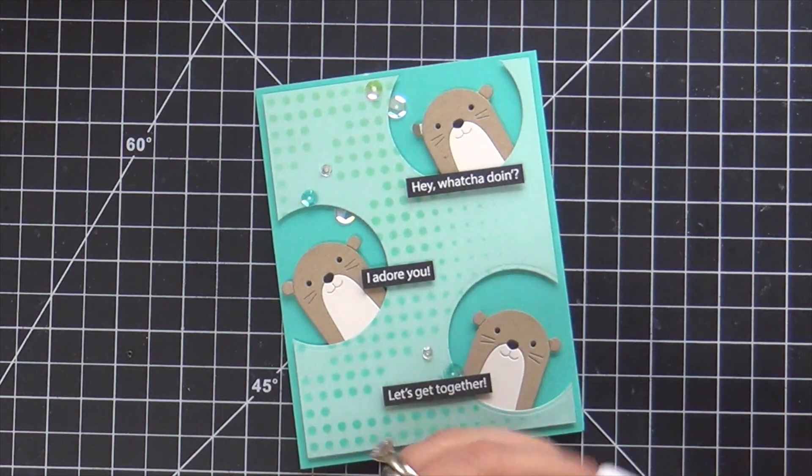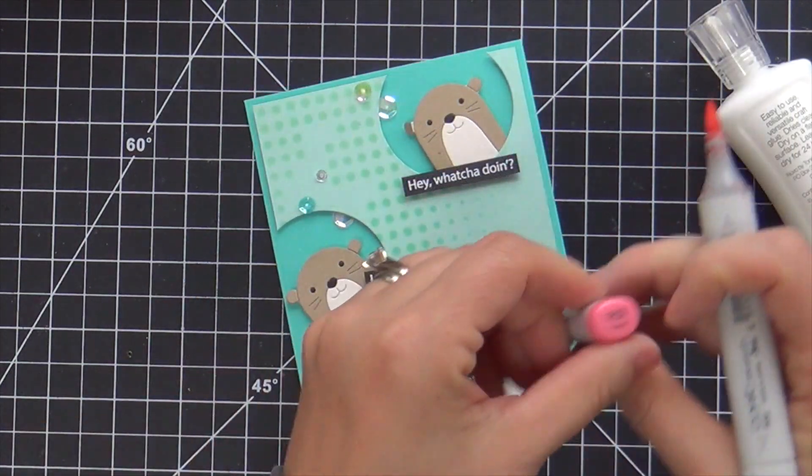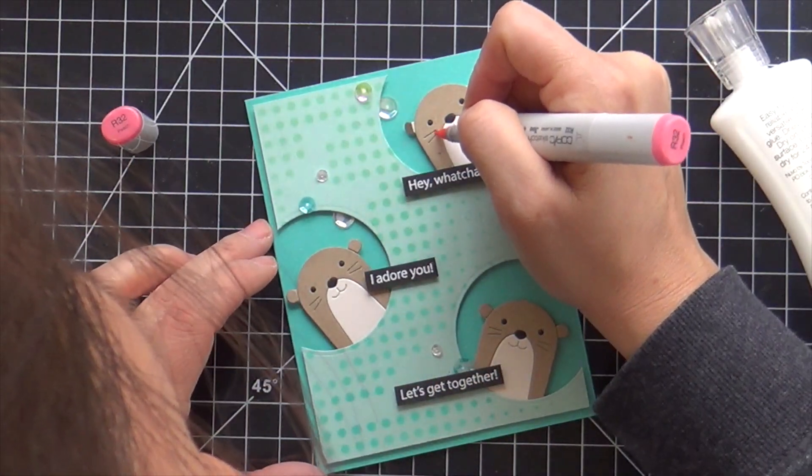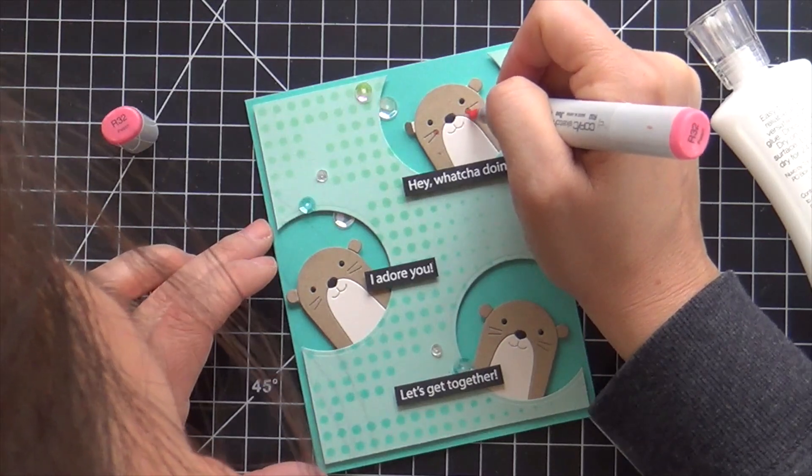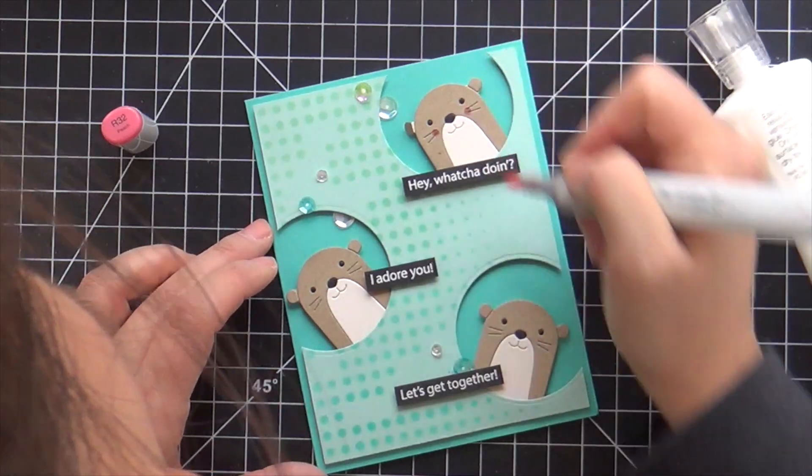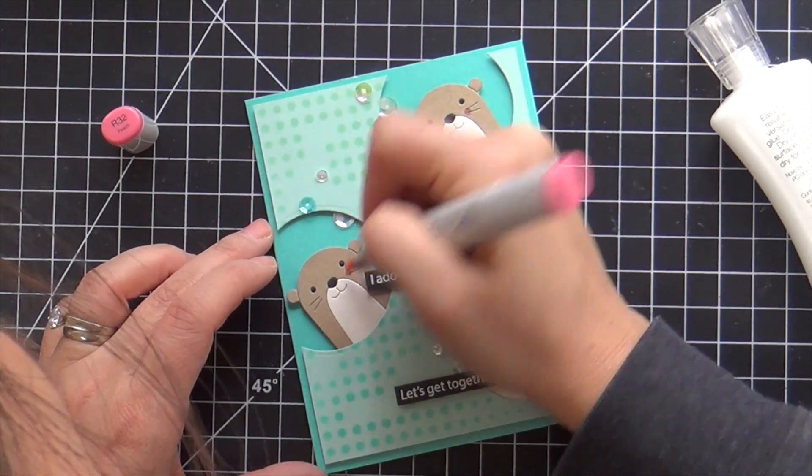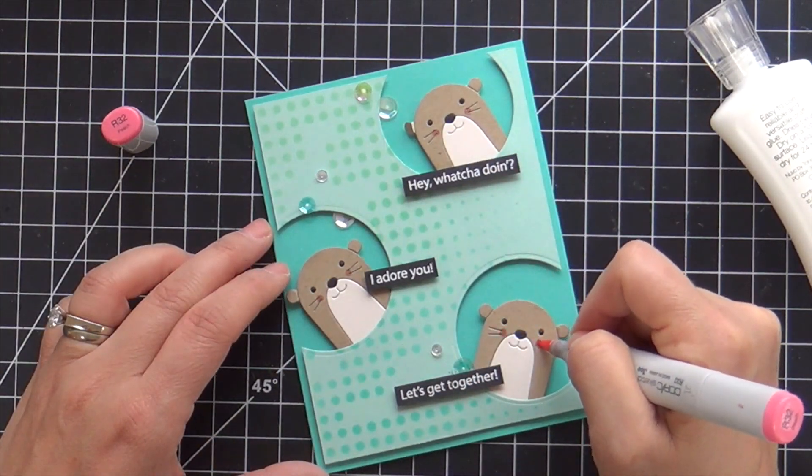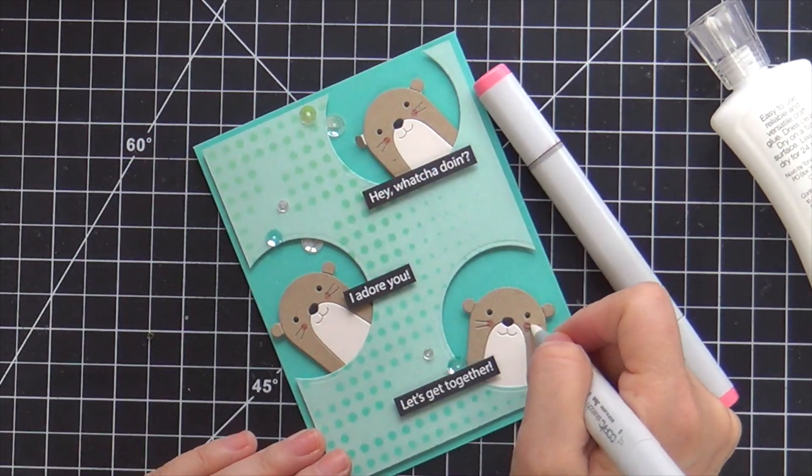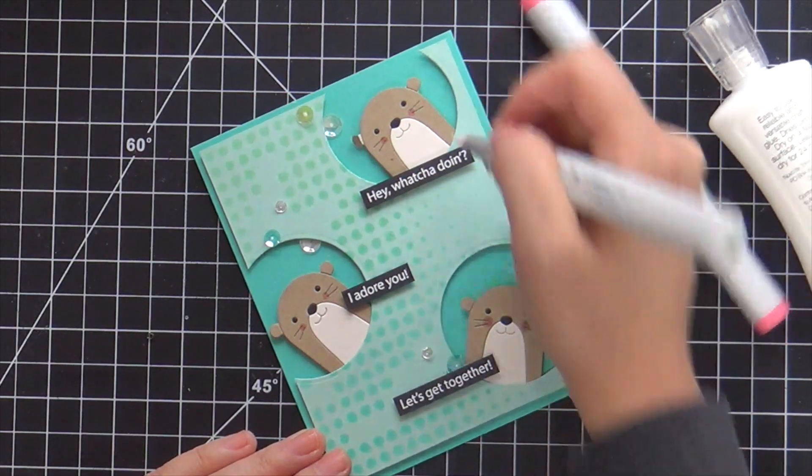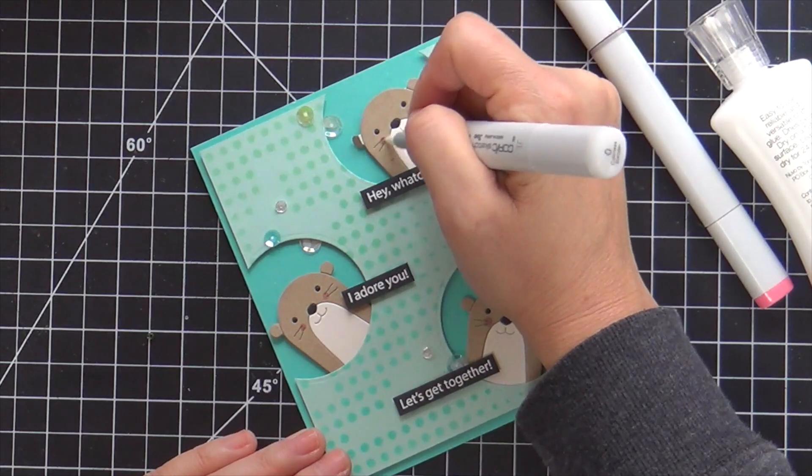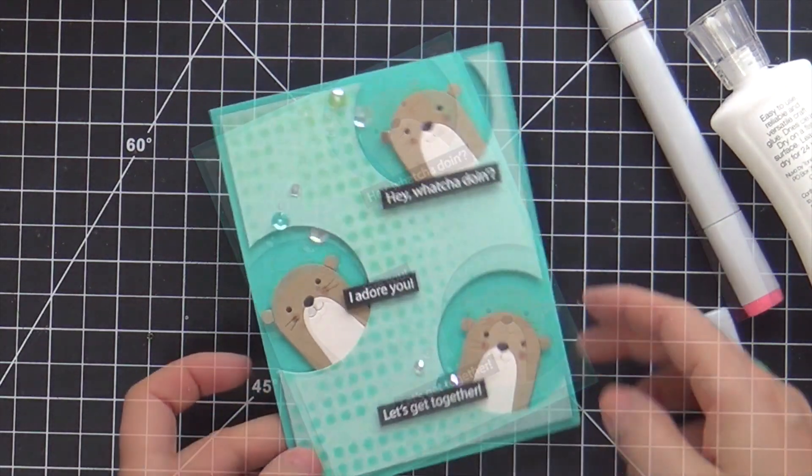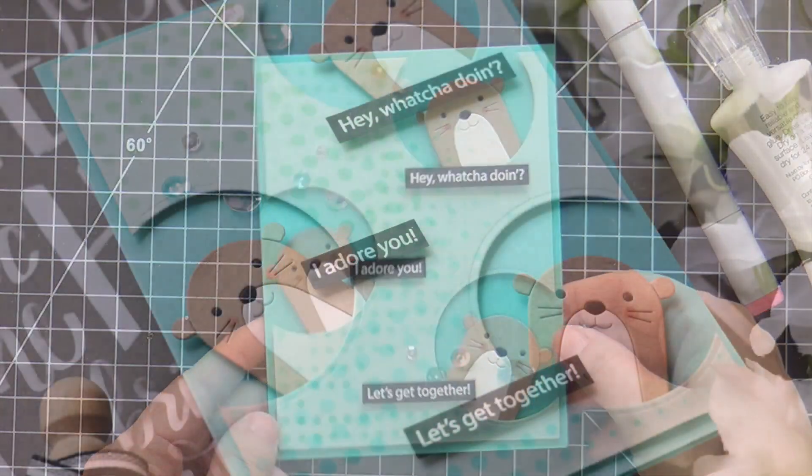And then to finish it off I got to bling it out with a few coordinating sequins and then finally the rosy cheeks. Now I know I've said before there's no card making police but if there were I feel like you would maybe get arrested if you did not add a rosy cheek to anything that has a cheek. It's kind of like breaking the law. I mean you're not really but you kind of are. It's an unwritten rule. So I always like to take a colorless blender and fade out the cheeks so it's softened. It's like a softened rosy cheek.